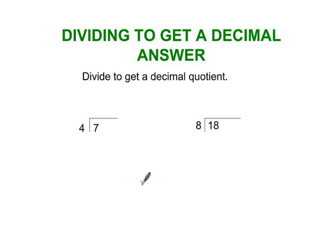You put four into seven. That goes one time. One times four is four. Seven minus four is three. Now normally you would just put remainder three, but we can't put remainder because we want a decimal quotient. So what I'm going to do is add on point zero to this, because seven and seven point zero are the same thing.